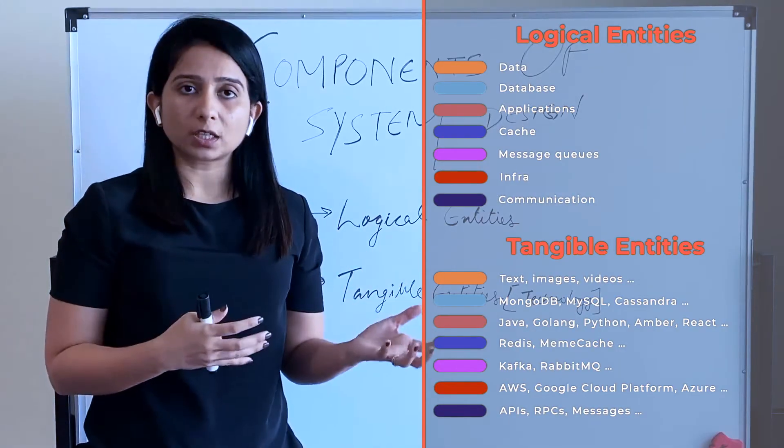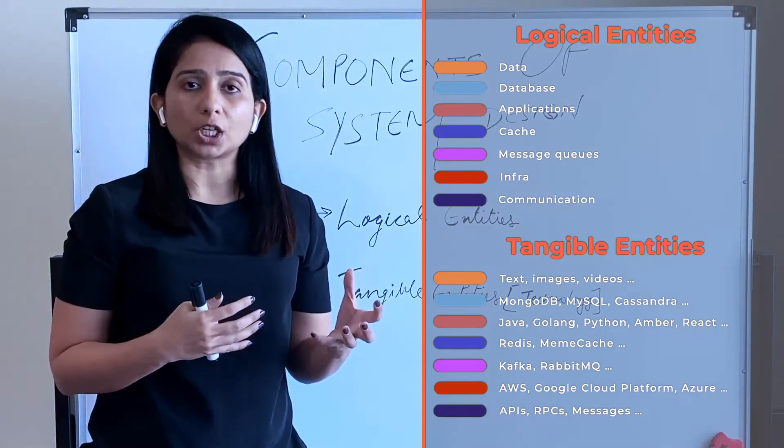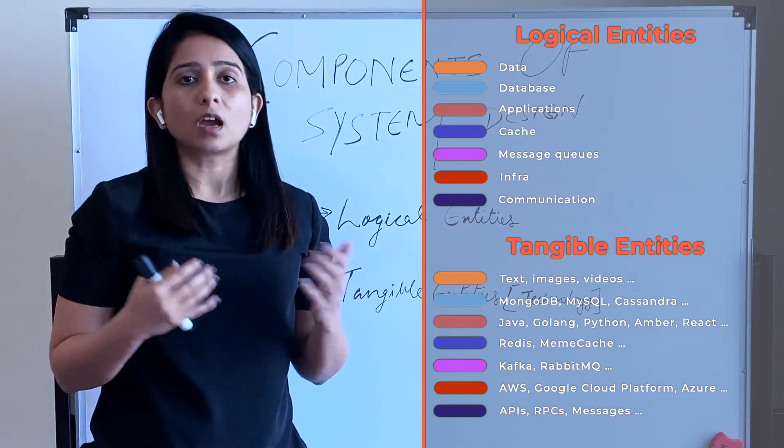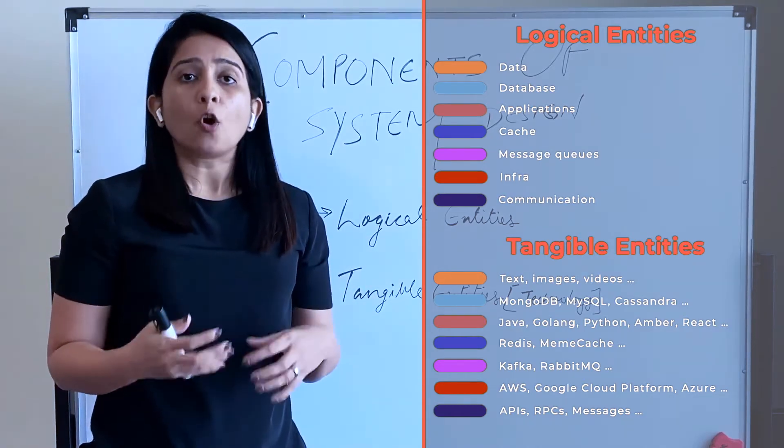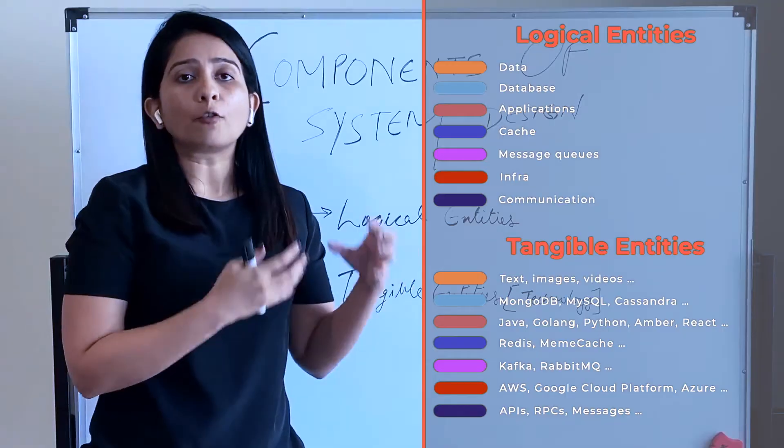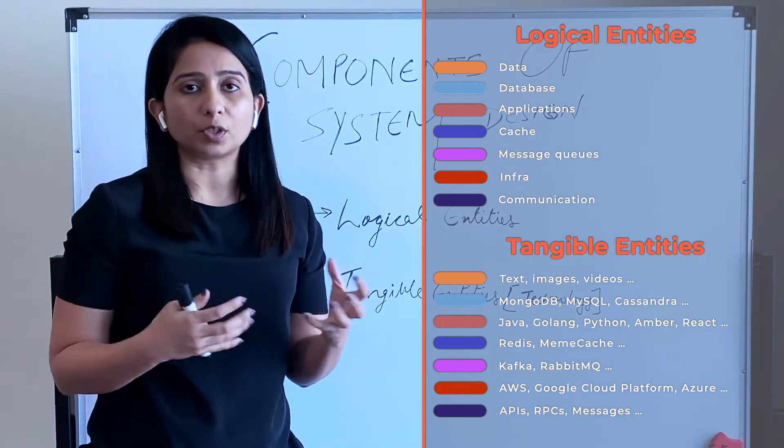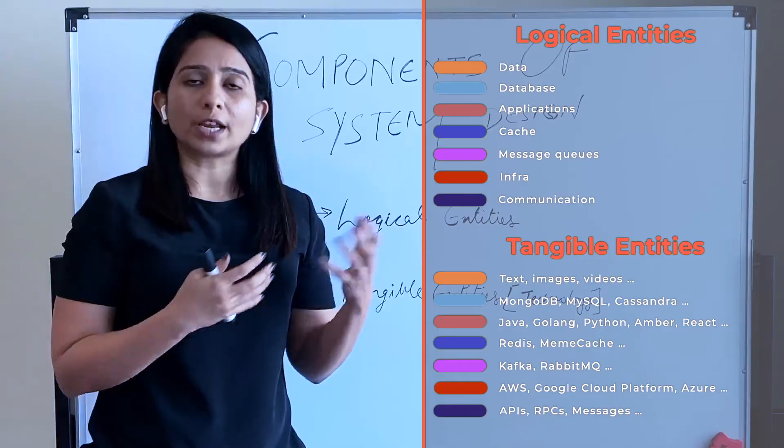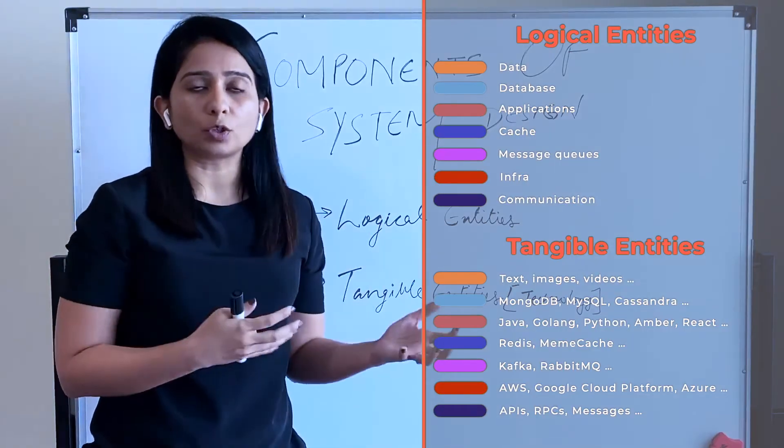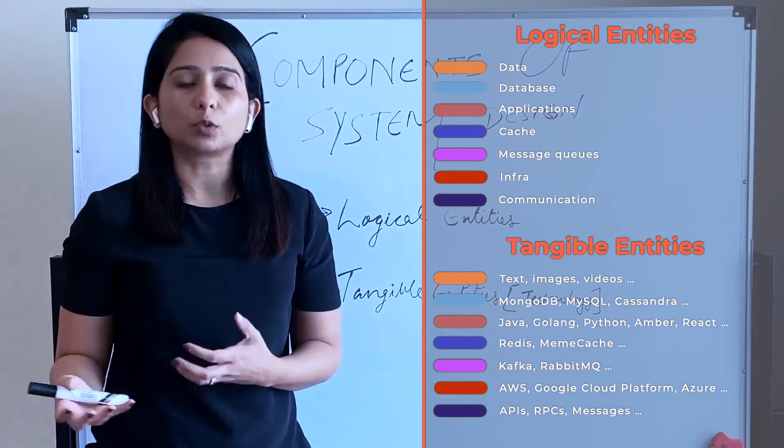Then for application and services or the code and their communication, we have APIs, RPCs, etc. For presentation layer, we have front-end applications which are built using frameworks like Ember, React, etc. For Android apps and iOS apps, they have their own native code bases in order to develop those applications.